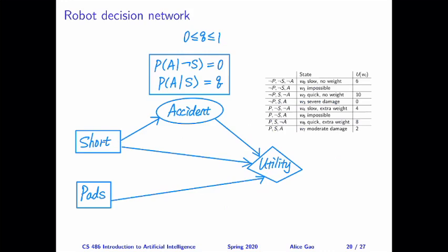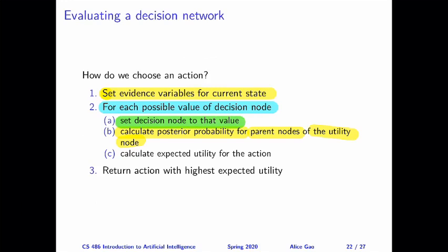In our decision network, we don't have any evidence variables, and we have two decision variables. We're going to set both decision variables to some value. For each parent of the utility node — there are three parents — we calculate their posterior probabilities. For short and pads, we don't have posterior probabilities. But for accident, we will have a posterior probability depending on the value of short.